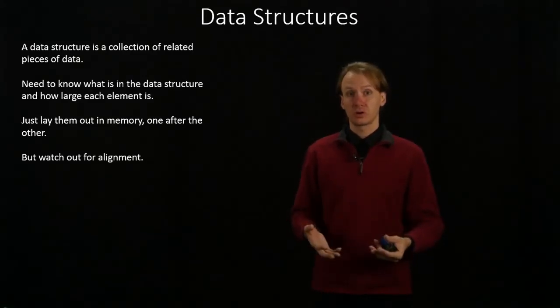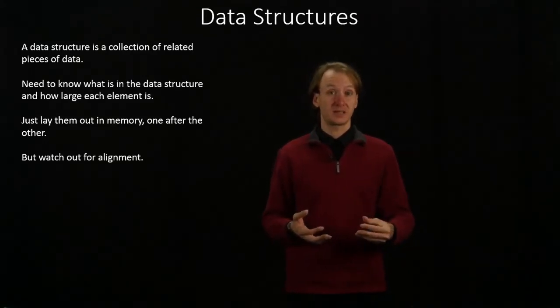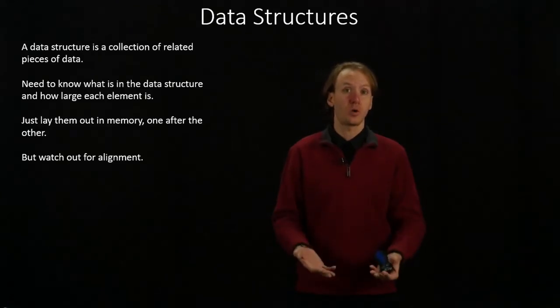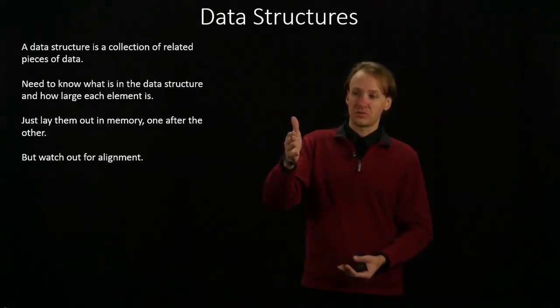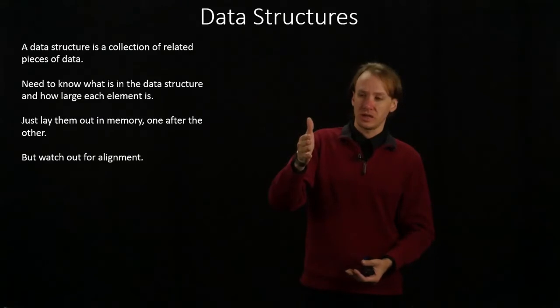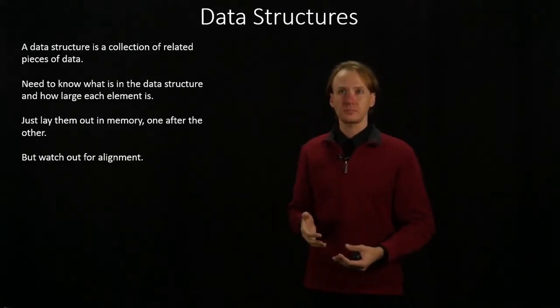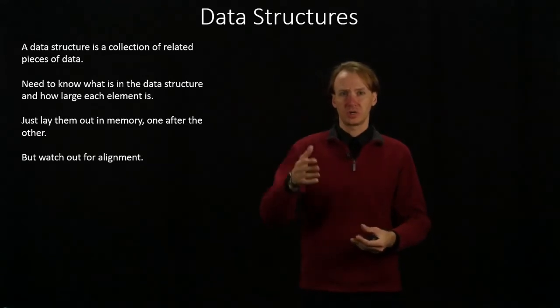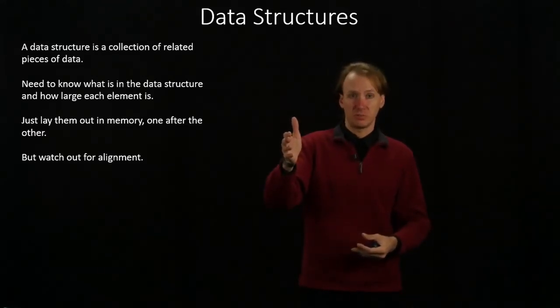If you're working with words, then the architecture is going to expect an address that is a multiple of four. So it will grab an address ending in zero, and then the next three bytes as well, so one, two, and three. If you wanted doubles, well, it would expect to get an address that's a multiple of eight.